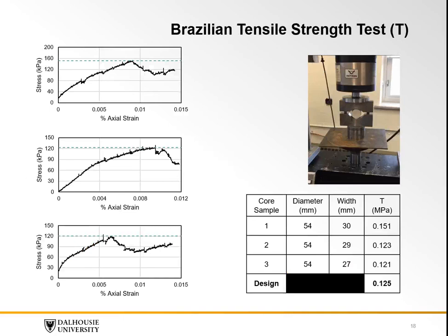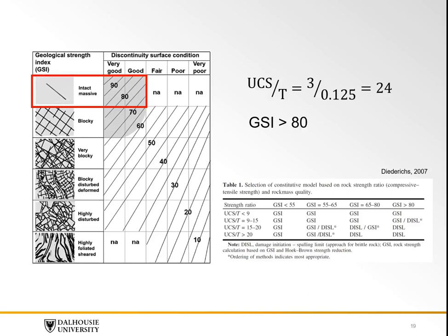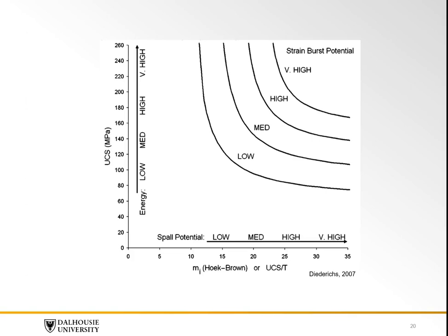To determine the tensile strength, the Brazilian test was implemented, and it was determined the tensile strength of the plaster was 0.125 MPa. The plaster is a massive material with no joints; therefore, the GSI was determined to be between 80 and 90. The ratio of the UCS and tensile strength in connection with the GSI showed there was potential for brittle failure. The graph from Diedrichs also shows high potential for spalling, but the energy is quite low; therefore, spalling is expected to not be as aggressive.